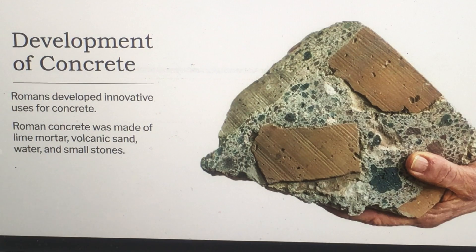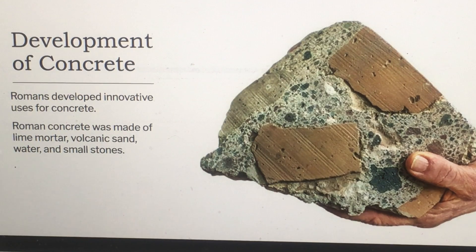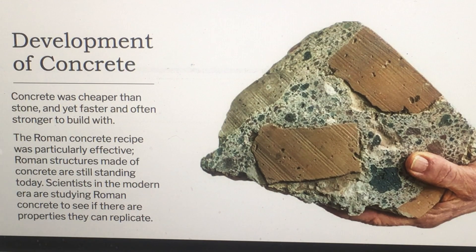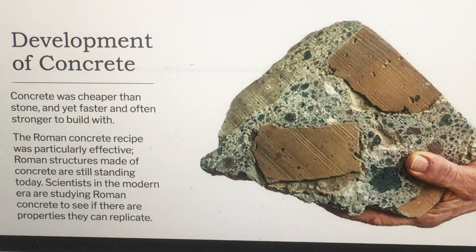One interesting aspect of Roman architecture is that they understood that mixing their concrete with seawater would make it resist erosion from sea air. It was cheaper than stone and often stronger to build with. Roman concrete was particularly effective, and many of their concrete structures are still standing today.